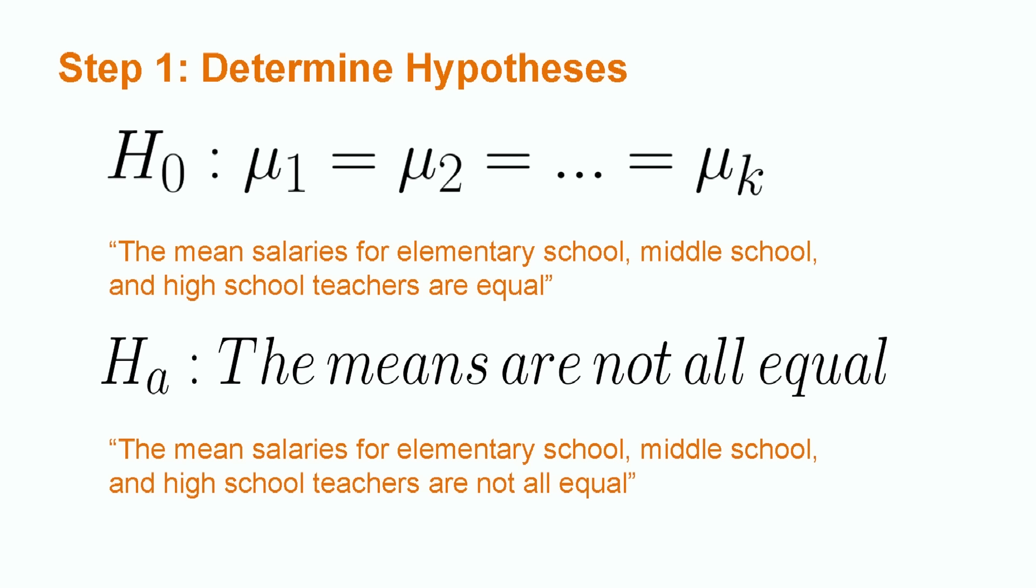For example, elementary school and middle school teachers may have the same mean salary, but if high school teachers have a different salary than the other two groups, we would still reject the null hypothesis.